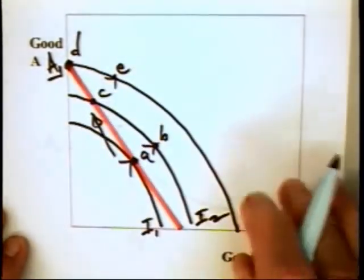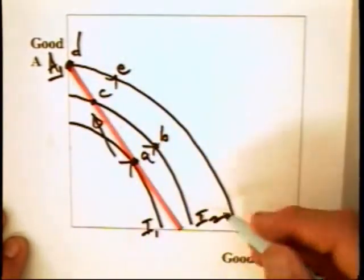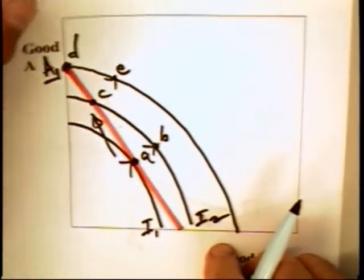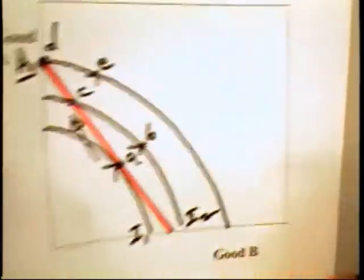So therefore, we have to rule out indifference curves that look like this, that are bowed out from the origin.